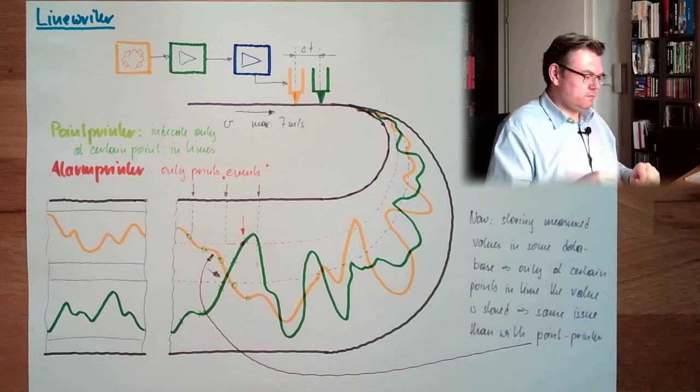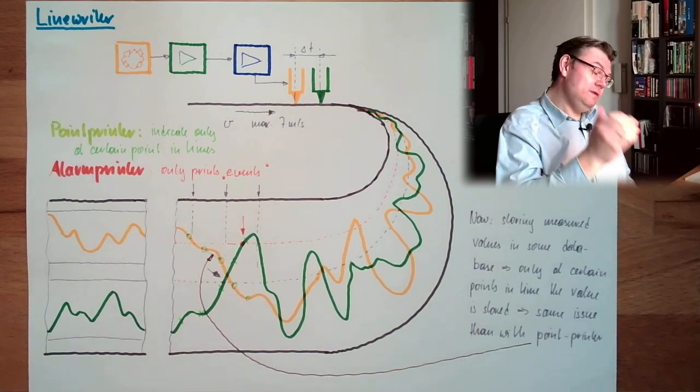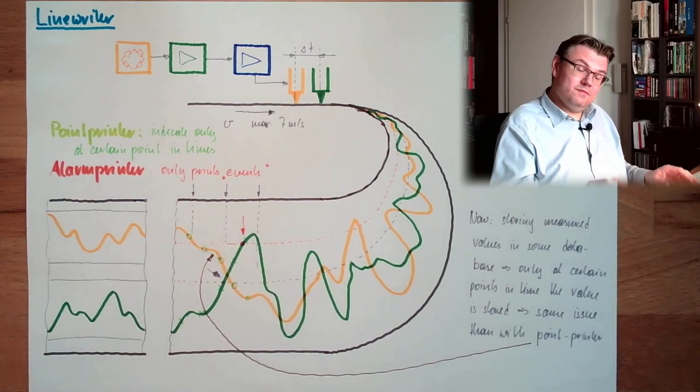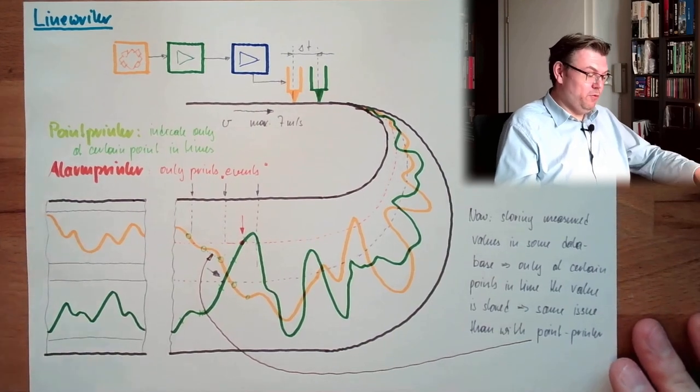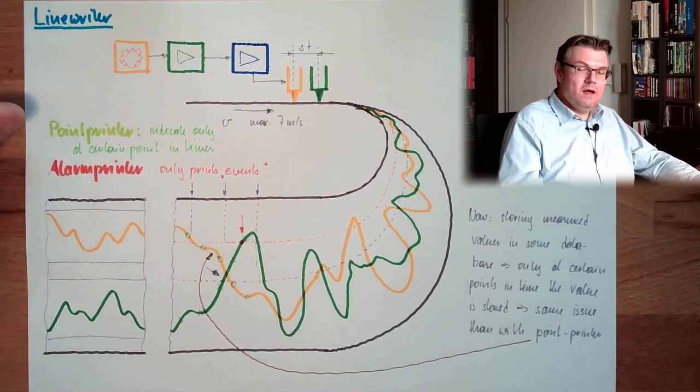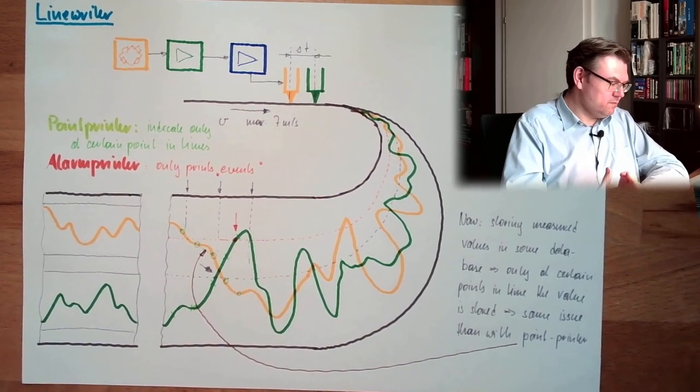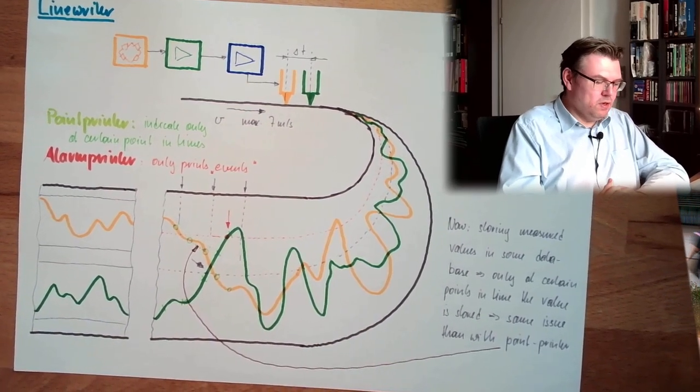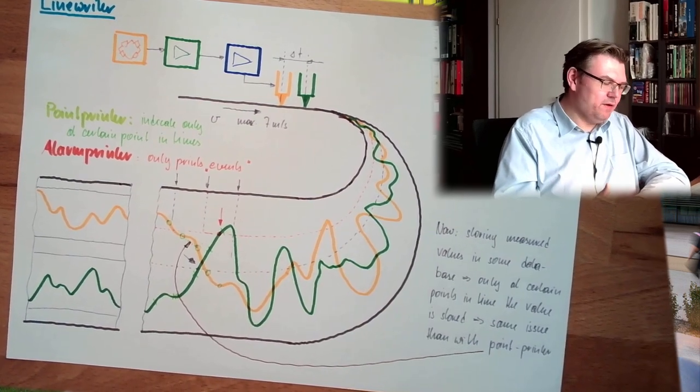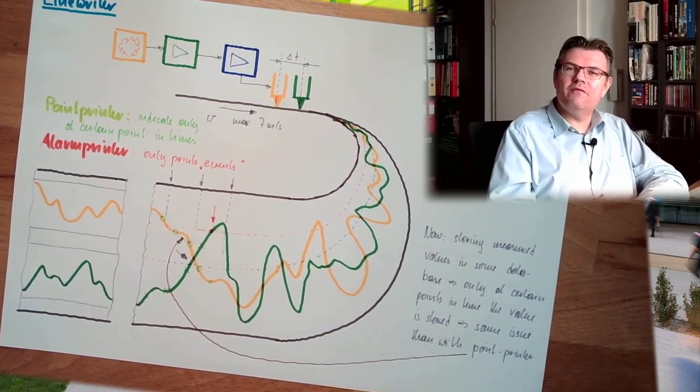Same issue then with point printer that we might have these. We cannot tell really. Line writer. So now I think you understand why I told you what a line writer is, how it worked to tell you the difference to a point printer.